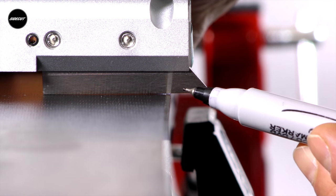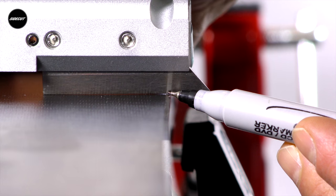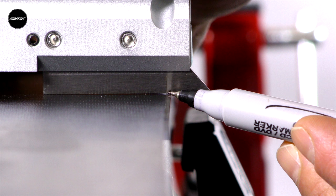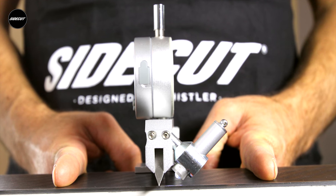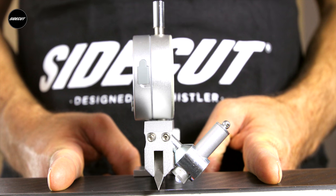Place on the ski ensuring the scribed line right here is directly at the crossover point where the base meets the steel edge. Position the gauge at 90 degrees or perpendicular to the side edge.